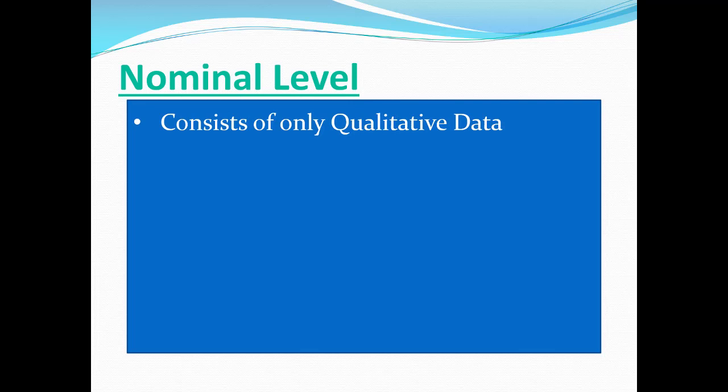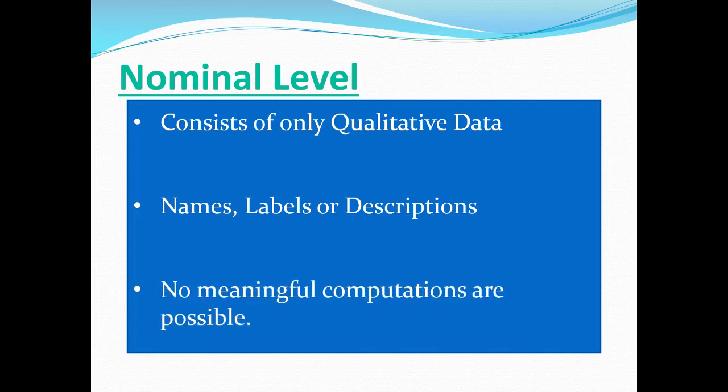The first is the nominal level of measurement. The word nominal comes from the same root word as the word name. Nominal level data consists of only qualitative data — names, labels, and descriptions. If all you have are names, labels, and descriptions, it doesn't make sense to do computations. How do you do an addition problem with two names? How do you multiply two descriptions? Data at the nominal level has no calculations that can happen.